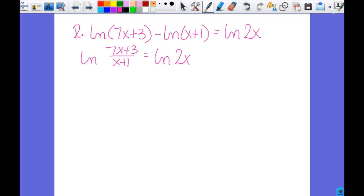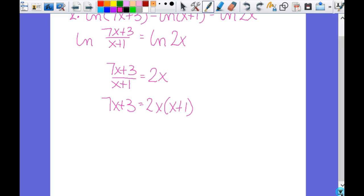So the natural log of 7x plus 3 over x plus 1 equals the natural log of 2x. Can I lay with me? Okay. So I have a single log on each side, which means I know that 7x plus 3 over x plus 1 equals 2x. So now this is going to give me 7x plus 3 equals 2x times x plus 1. 7x plus 3 equals 2x squared plus 2x. So what kind of equation do I have? Quadratic.